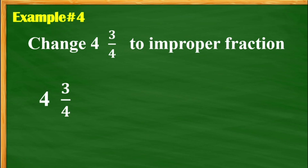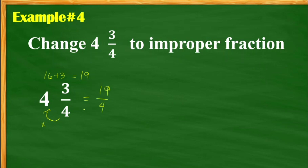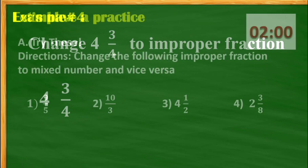Another example, example number 4: change 4 and 3 fourths to an improper fraction. Just multiply 4 times 4. The answer is 16, plus the numerator 3. The answer is 19. So the final answer is 19 fourths. Copy the denominator.